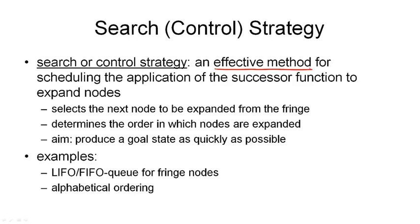A perfect strategy would know where the goal state is, but if we knew that we wouldn't need to search. With the strategy as an argument to node selection, the algorithm is deterministic as long as the strategy is deterministic. The strategy can be implemented by keeping fringe nodes in a specific data structure — a queue that is either last-in-first-out or first-in-first-out — and these result in different search algorithms.